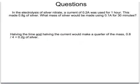Here's another question. In the electrolysis of silver nitrate, a current of 0.2 amps was used for one hour. This made 0.8 grams of silver. What mass of silver will be made using 0.1 amp for 30 minutes? Here, we are halving the current and also halving the time. So the amount of silver produced will be one quarter of the original mass. One quarter of 0.8 is 0.2 grams of silver.